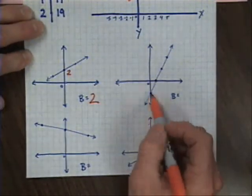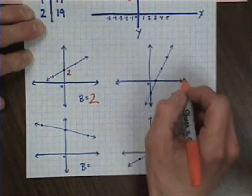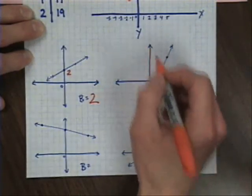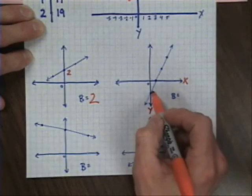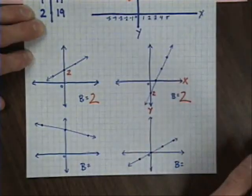Over here, I see the line touches at two points, but the first point it touches is the x-axis. The second point it touches is the y-axis. That's the one that I want. Since it touches down here at 2, b again is 2.